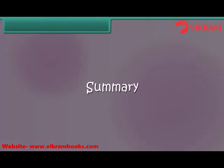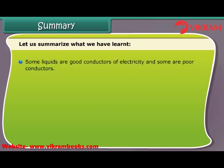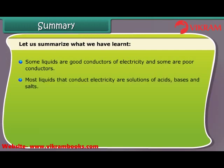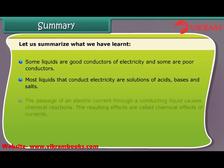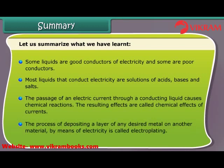In summary: some liquids are good conductors of electricity and some are poor conductors. Most liquids that conduct electricity are solutions of acids, bases, and salts. The passage of an electric current through a conducting liquid causes chemical reactions — the resulting effects are called the chemical effects of current. The process of depositing a layer of any desired metal on another material by means of electricity is called electroplating.